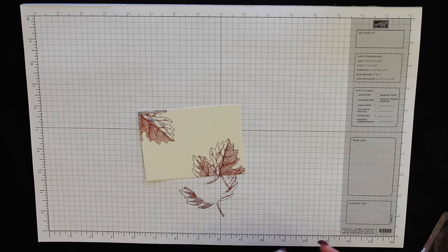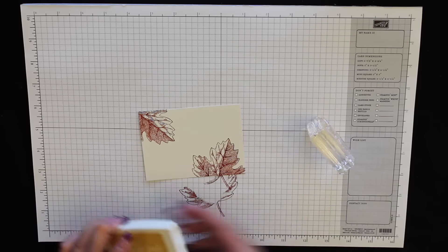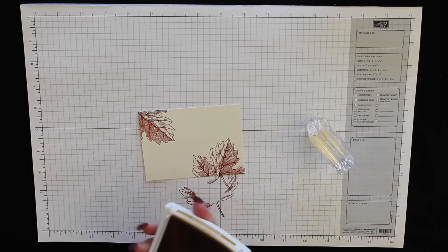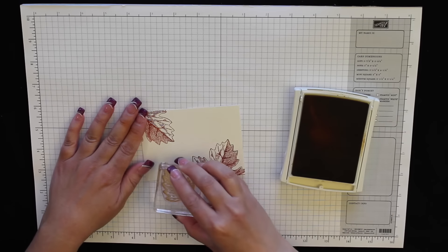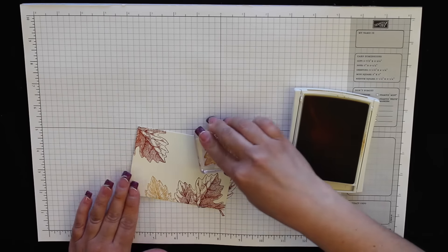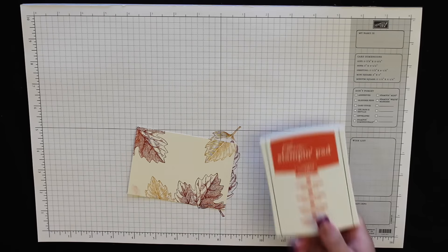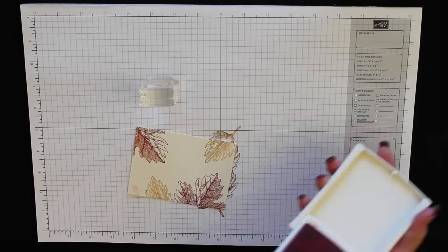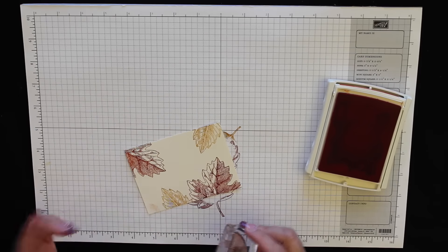Okay, next we're going to grab the next largest leaf and our Delightful Dijon ink. Stamp one here, another one up in this corner.